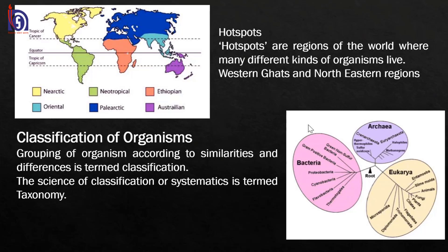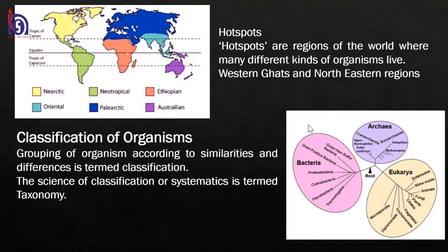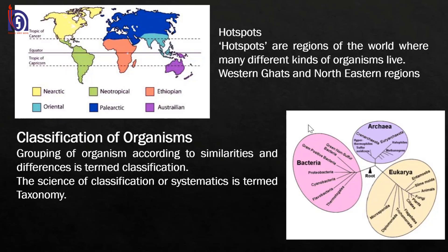Each of these six regions has different types of organisms, and we generally consider them as hotspots. Hotspots are regions of the world where many different kinds of organisms live — regions having rich diversity at the organism level. Such diversity exists in the Western Ghats and northeastern Himalayan regions of India, which are considered to have the most diversified species of organisms.